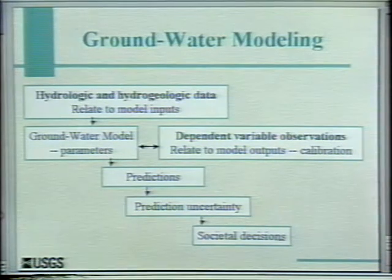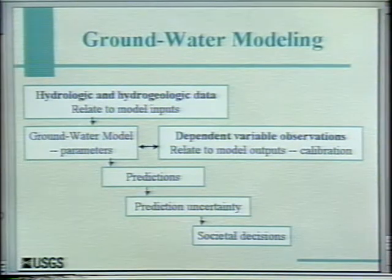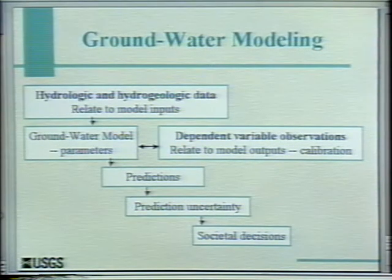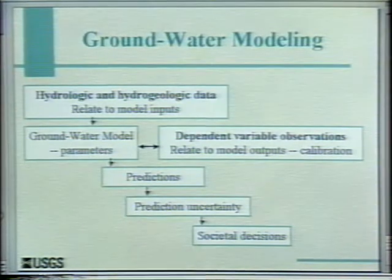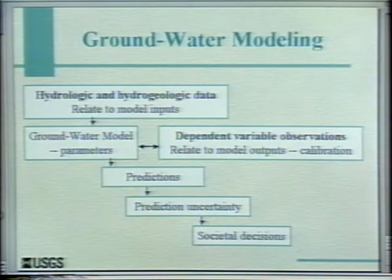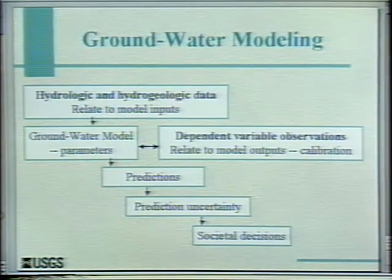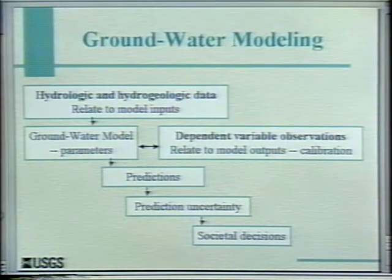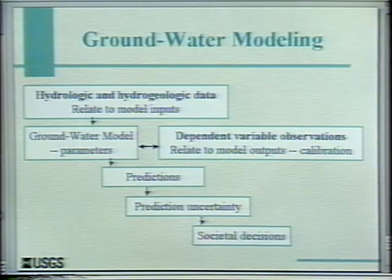Groundwater modeling can be thought of as proceeding in this sequence of steps. You start off with hydrologic and hydrogeologic data related to model input. From that, you build a groundwater model characterized by certain parameters — aspects of the system that you have to assign values to. Sometimes we have data related to model outputs, which I'm calling dependent variable observations. In groundwater, that's frequently hydraulic heads, maybe drawdowns, streamflow gains and losses, some kind of flow. We'll be dealing with spring flows in the example I'll be using, and you might also say something about transport.